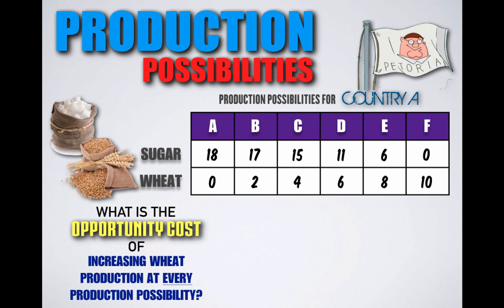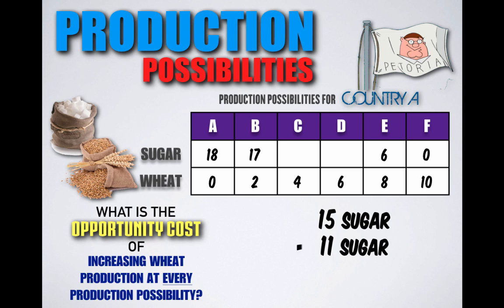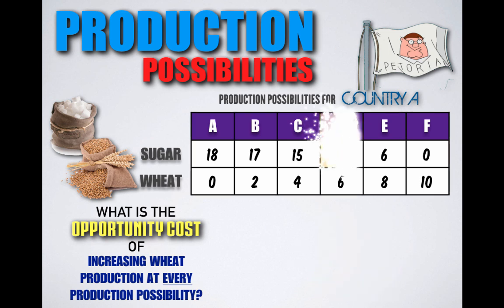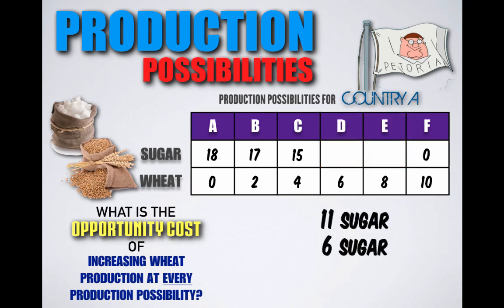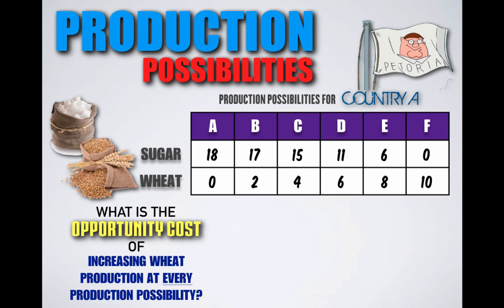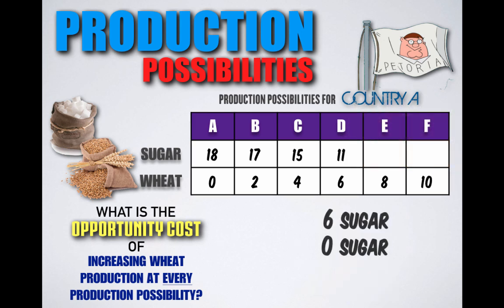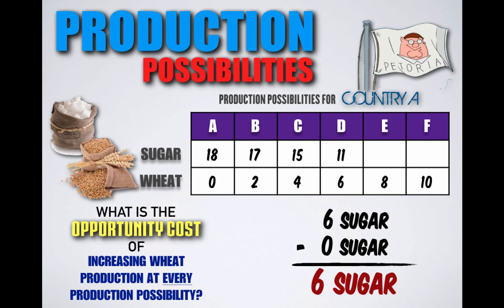Shifting from combination C to D, Petoria decreases sugar production from 15 units to 11 units, meaning the opportunity cost would be four units of sugar. Changing from combination D to E, Petoria decreases sugar from 11 units to six units, and the opportunity cost would be five units of sugar. Finally, shifting from combination E to F, Petoria decreases sugar production from six units to no units at all, meaning the opportunity cost would be six units of sugar.